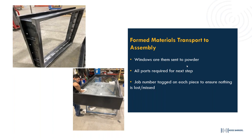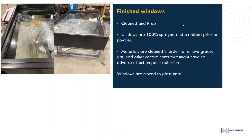Parts go through multiple phases before reaching the powder coating line. Everything is clearly marked and labeled — you can faintly see a shop job number on the parts here — so each phase can confirm all components are present before continuing. Windows are then 100% sprayed and scrubbed prior to powder coating to remove machine residue and oils that could prevent primer or color coat from adhering. After powder coating, windows move directly to glass installation.